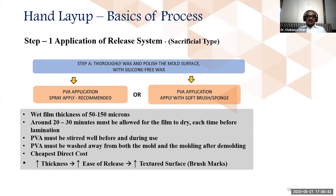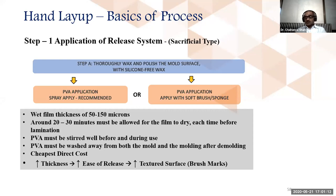Step one is to thoroughly wax and polish the mold surface if using the sacrificial system — which must be a silicone-free wax — then apply PVA using various methods, following the steps carefully. The PVA drying must happen properly. After demolding, PVA must wash away from both the mold and the molding.